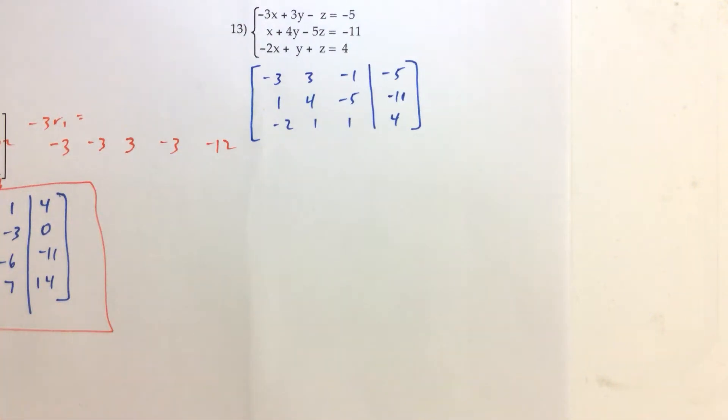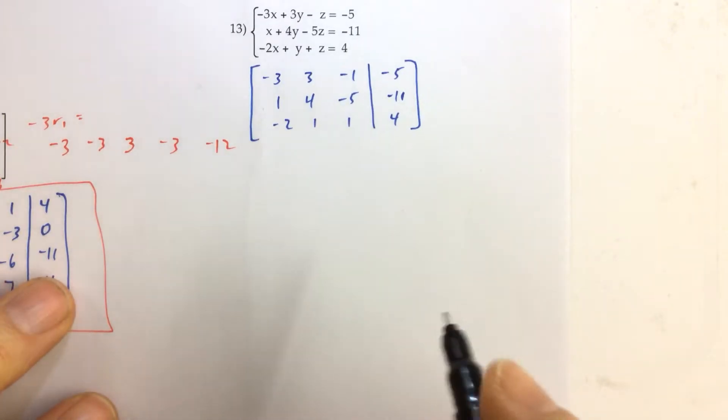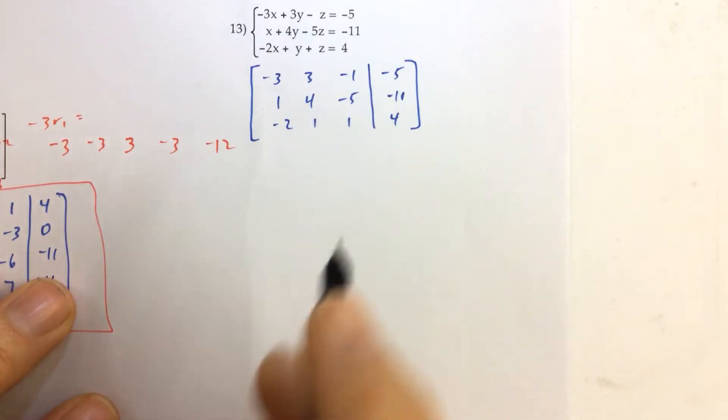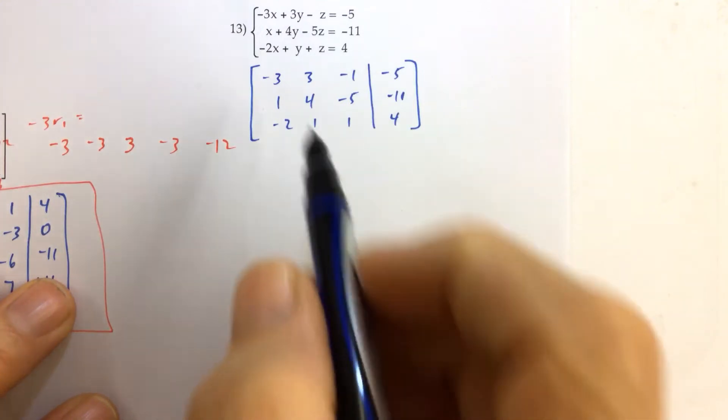I think that after this example you will see better the power of how matrices really help save time. I'm going to show you this example in real time. You might want to replay the example a couple times just to make sure you understand the process. But this is what it would look like in real time.